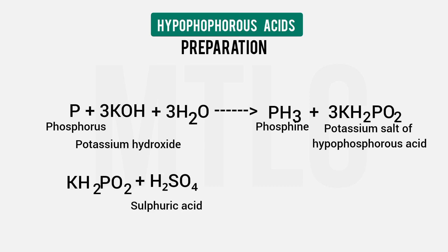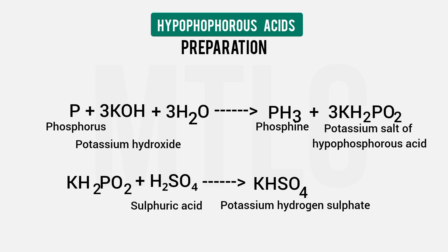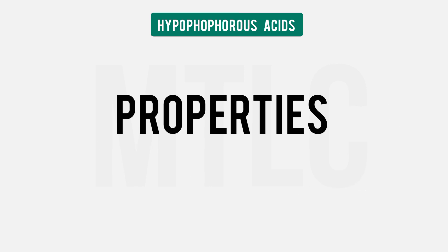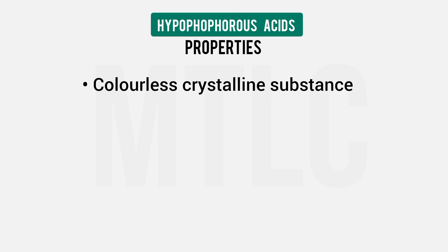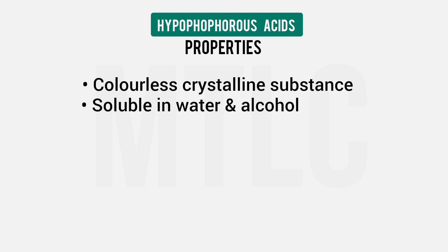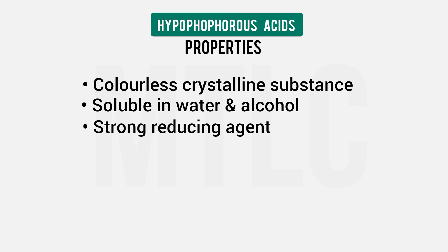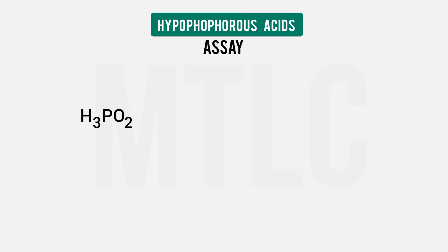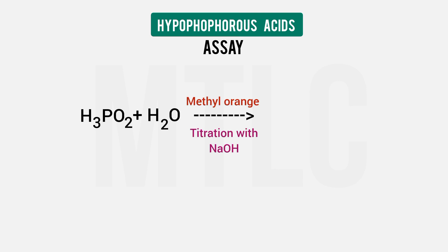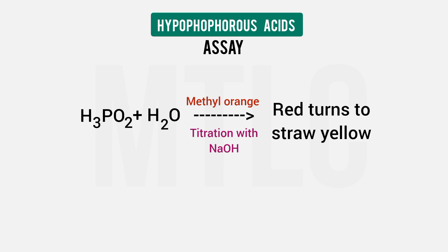If we add Sulphuric Acid, we will get Hypo Phosphorus Acid. It is a colorless crystalline substance, soluble in water and alcohol. It is a strong Reducing Agent. Hypo Phosphorus Acid is diluted in water and sodium hydroxide. Methyl Orange is used as an indicator, showing red or yellow color.